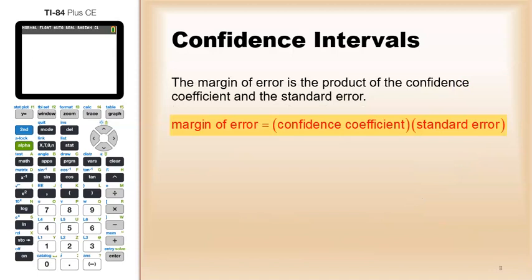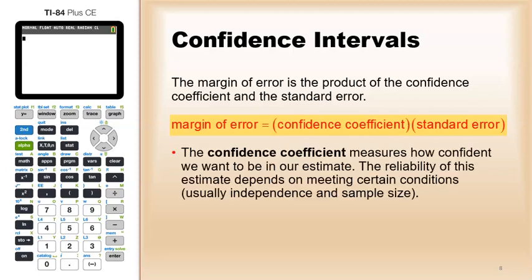Now that margin of error is the product of confidence coefficient and standard error. So far for confidence coefficient, we've been looking at 1.64 for 90%, 1.96 for 95%, 2.58 for 99%. The confidence coefficient measures how confident we want to be in our estimate. The reliability of this estimate depends on meeting certain conditions, usually independence and sample size.